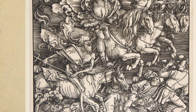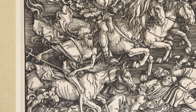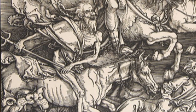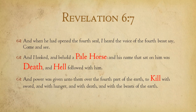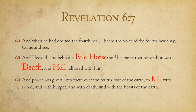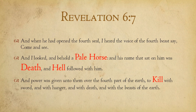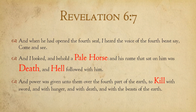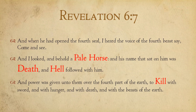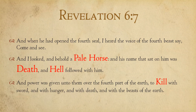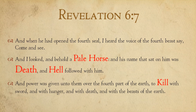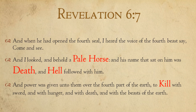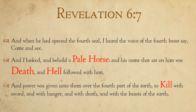I'd like you to focus on the figure of death in the lower left corner. These are the words that describe this figure of death: 'And when he had opened the fourth seal, I heard a voice of the fourth beast say, Come and see. And I looked, and behold, a pale horse, and his name that sat on him was Death, and hell followed with him. And power was given unto them over the fourth part of the earth, to kill with sword, and with hunger, and with death, and with the beasts of the earth.'